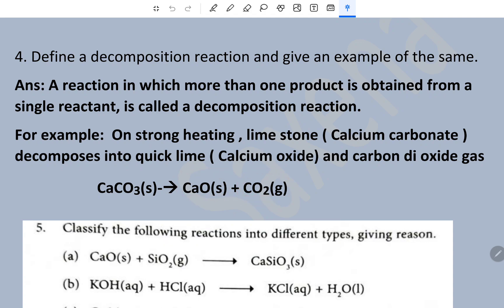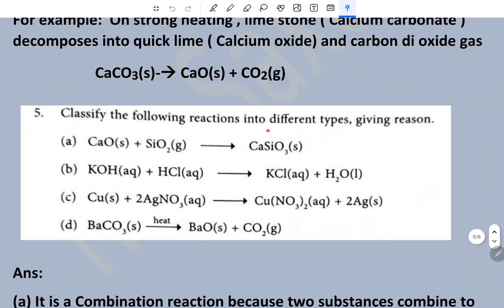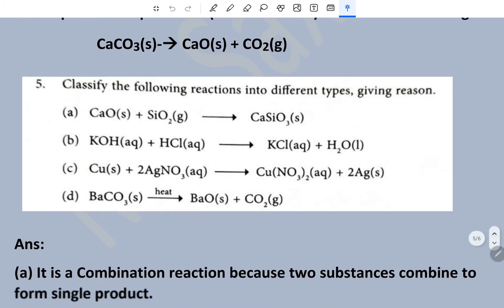Now classify the following reactions into different types. Here it is a combination reaction since two substances are combined. Here it is a displacement reaction — chlorine displaces. This one is a neutralization reaction. This is a displacement reaction and this is a decomposition reaction. This one is a combination reaction, this is neutralization reaction, this is displacement reaction, and this is decomposition reaction.